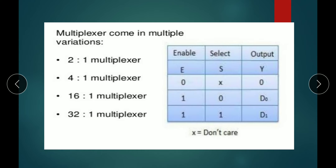This is the truth table for the 2-to-1 multiplexer. Here is the enable, the select, and the output. When the enable E is 0, that is the initial condition, the output is always 0.